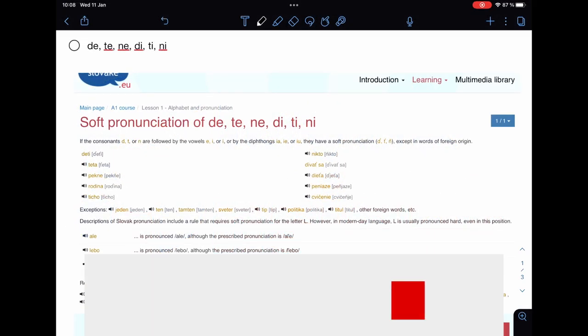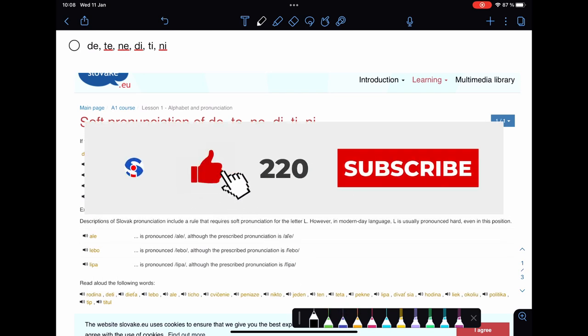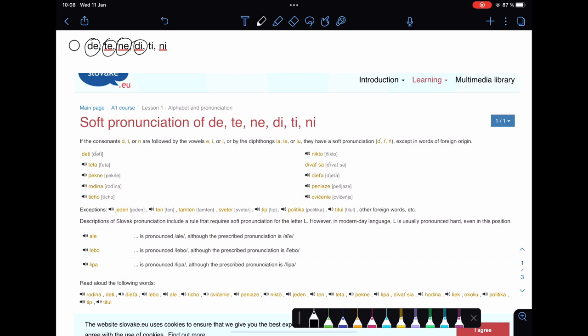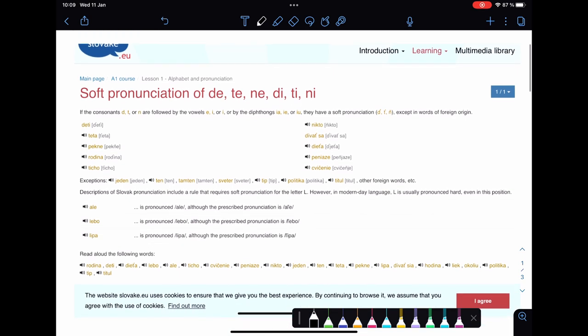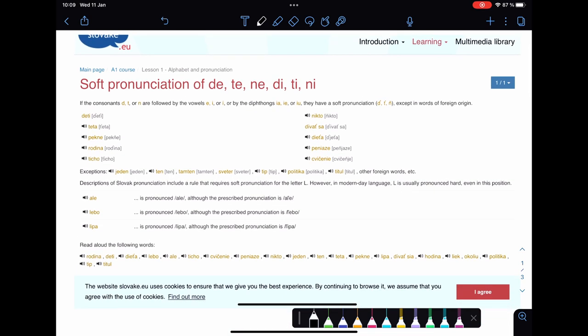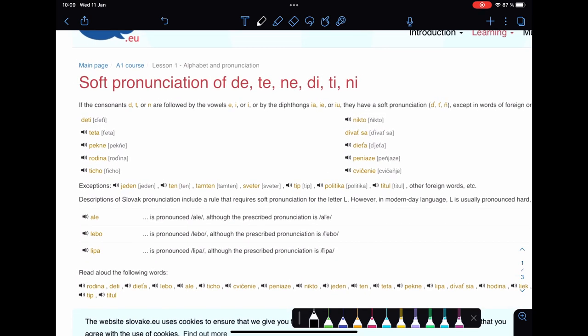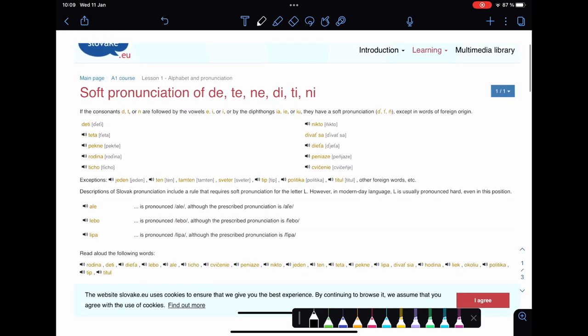Hello guys, today we are gonna discuss correct pronunciation of de, te, ne, di, ti, ni. It's very important because many people who learn Slovak pronounce these group letters not correctly.